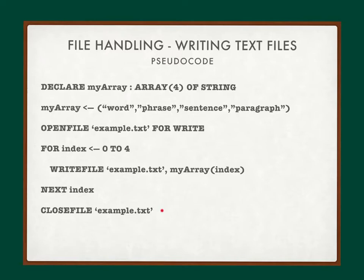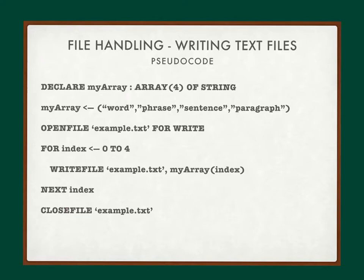It's really important when reading and writing files to close the file when you're finished using it. If you don't, it keeps a pointer to that file open in memory, which causes issues. If you continually try to open the file, every time you open it a new pointer is created in memory, and eventually there will be locking issues — for example, if another program tries to open and write to the same file simultaneously. It's really good practice to close the file when you're finished using it.